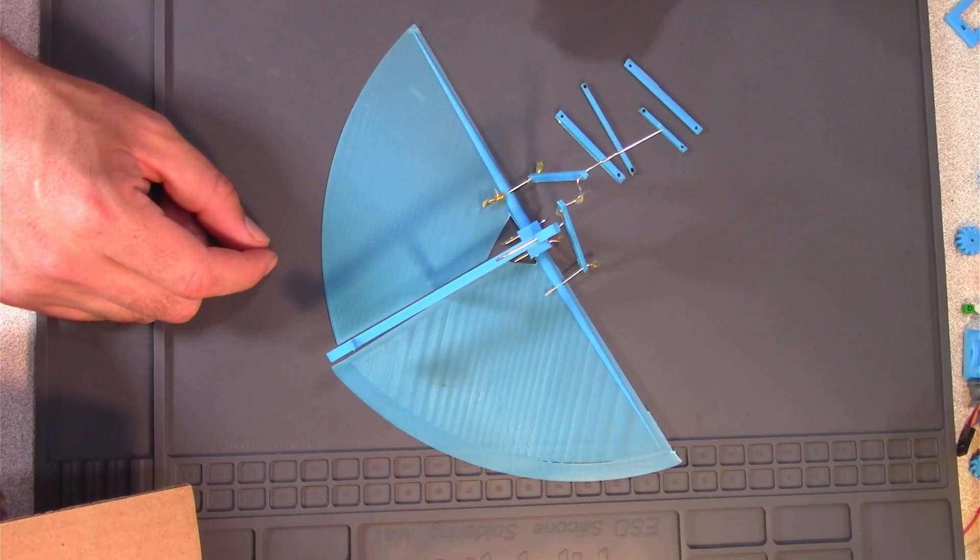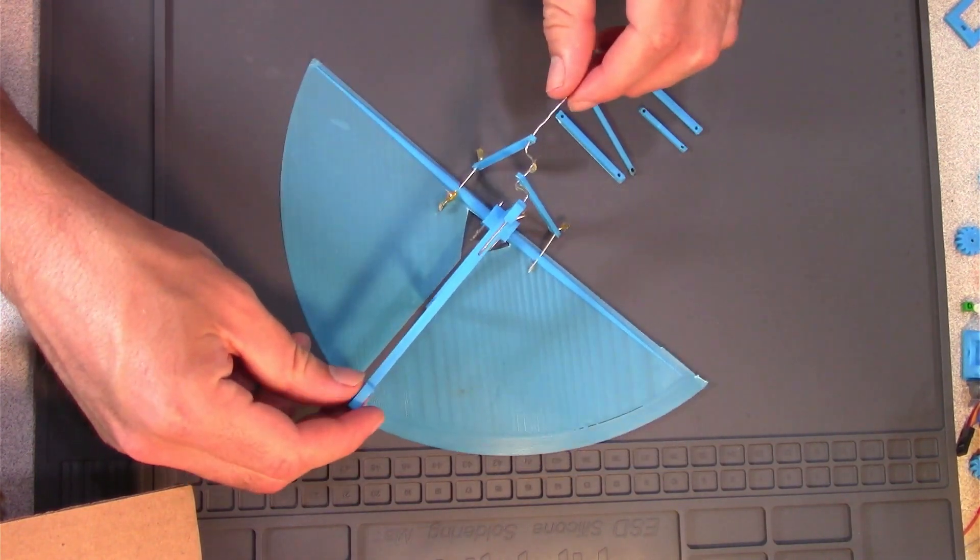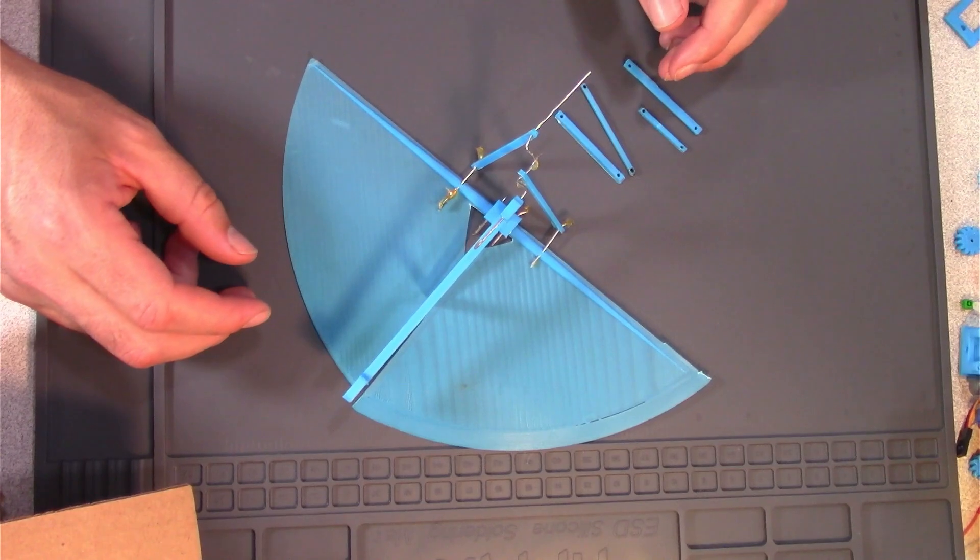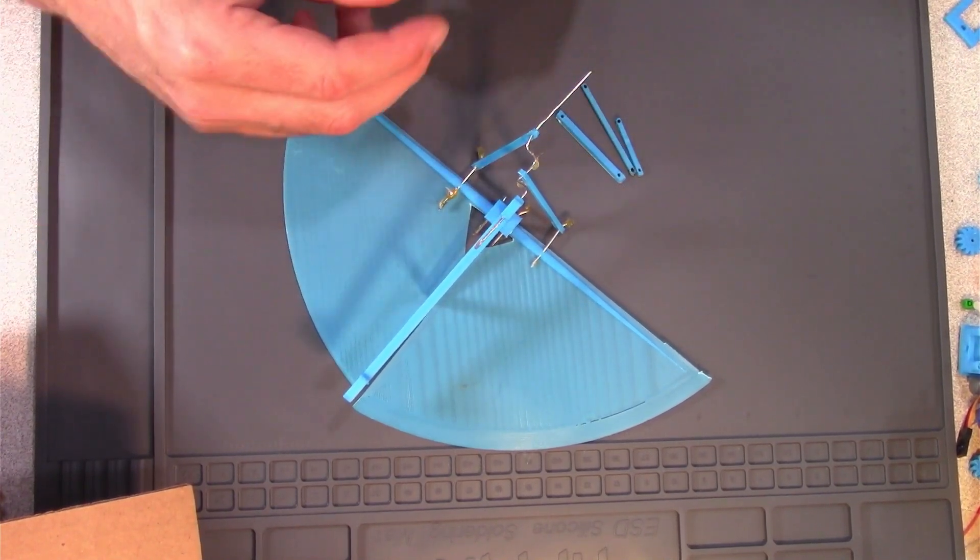Getting the wings to flap took lots of trial and error. One of the things I found to be helpful was setting the Ornithopter on its wings. This allowed me to test out different size levers.